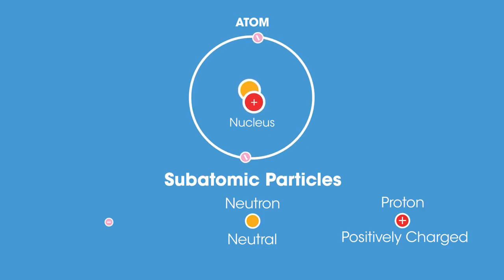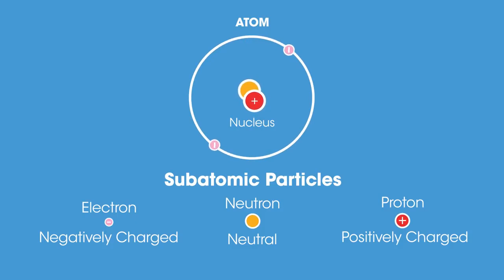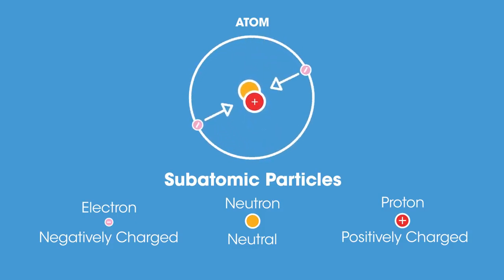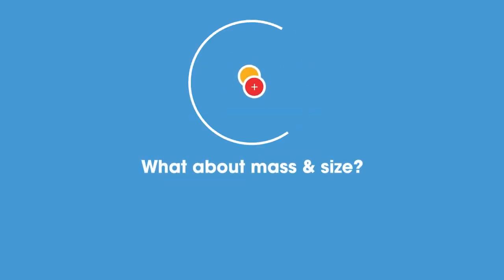Much like how the sun has planets orbiting it, the nucleus has electrons orbiting it. Electrons have a negative charge. Because electrons are negatively charged and the nucleus is positively charged, they are electrostatically attracted to each other — like how gravity ensures attraction between planets and the sun.